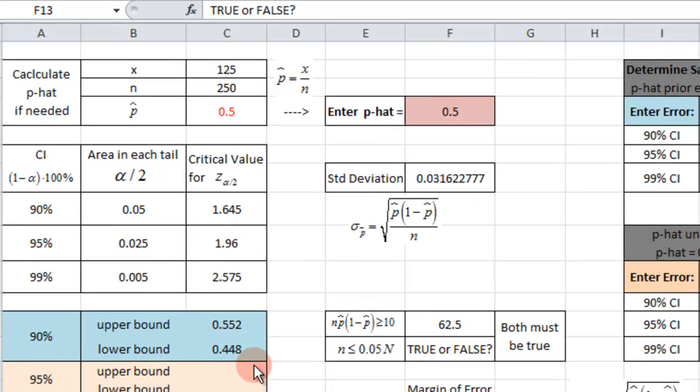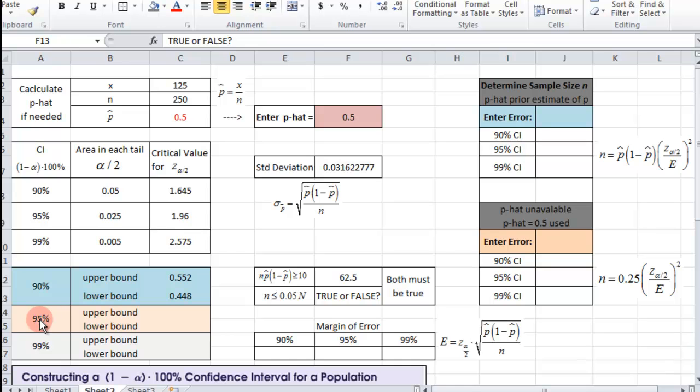Then now I'm going to fill the rest of these in. It's just basically the 95% will use this value in place of the critical number. Same basic formula, and then 99 will use this. So I'll pause it and fill the rest of that in.